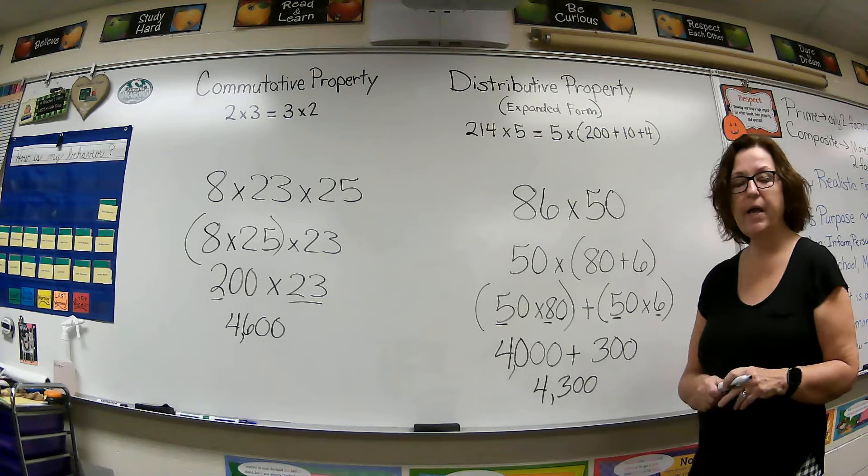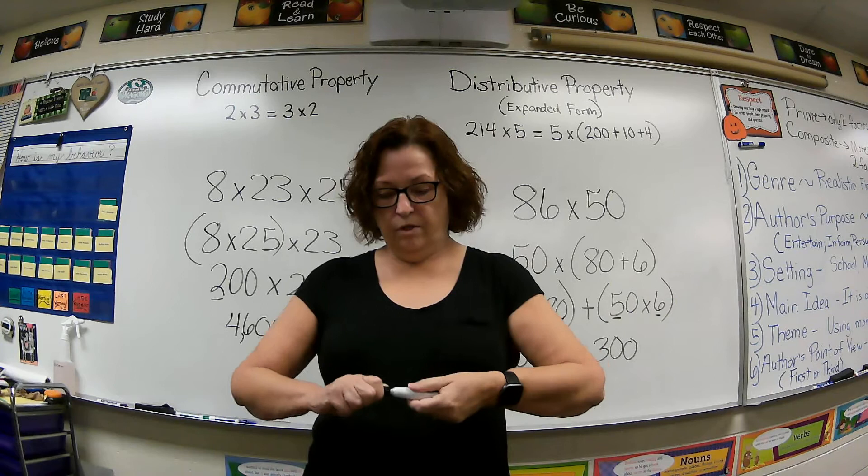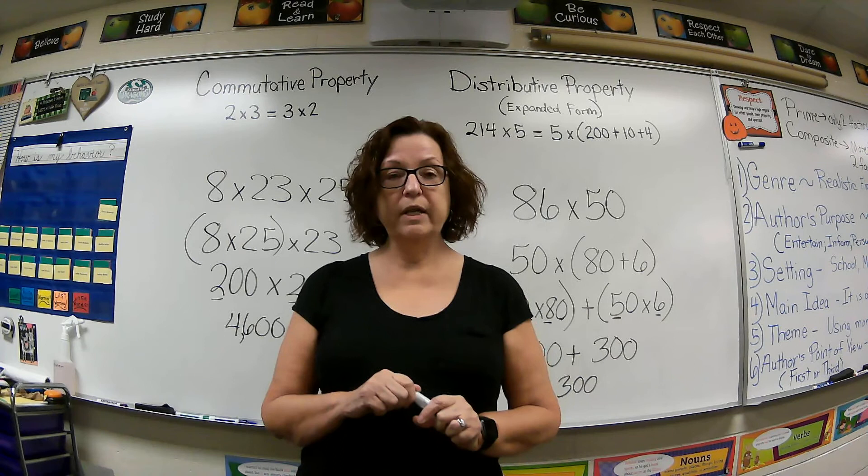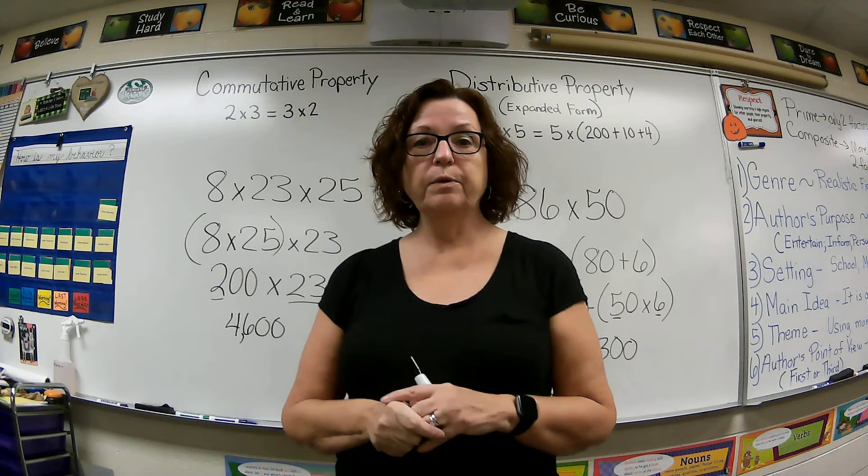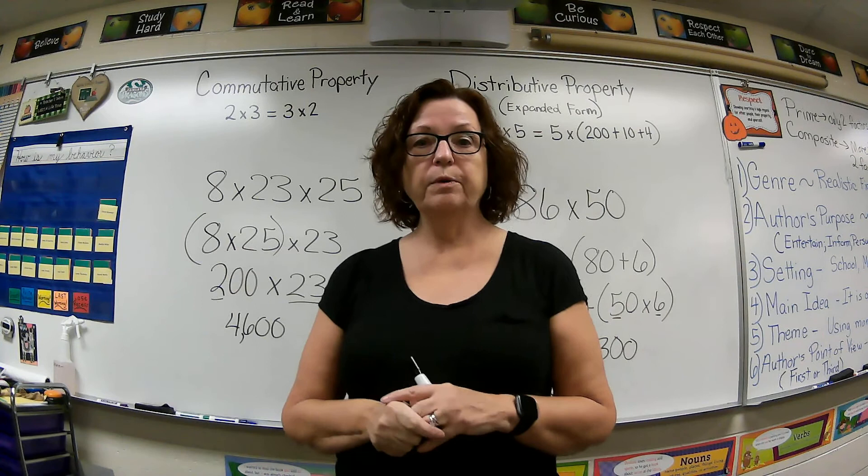Okay, so when you do your worksheet today, 2.8, don't pay any attention to the example they give you. That is not how I want you to do it. I want you to do it either using commutative properties, switching those numbers around, or using the distributive property using the expanded form and multiplying each add-in by that number. All right. Have a fun math-tastic day everyone. Bye-bye.